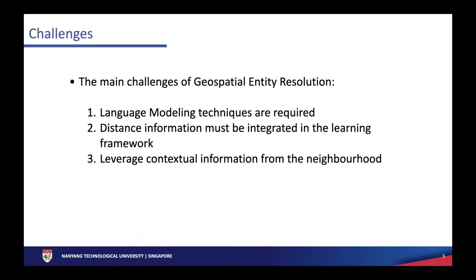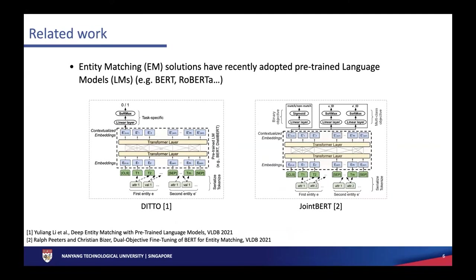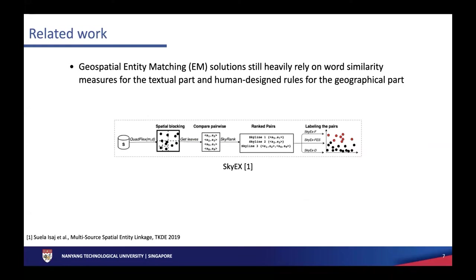To summarize, the main challenges for automatic integration of geospatial data are: first, we need language modeling techniques; second, we need to include distance information in the learning framework; and third, we want to leverage contextual information from the neighborhood. Regarding related work, traditional entity resolution state-of-the-art algorithms are highly dominated by pre-trained language models, as witnessed by Ditto and JointBERT. In contrast, geospatial entity matching solutions still heavily rely on word similarity measures and human-designed rules for the geographical part, which are expensive and cannot be integrated in a learning framework.